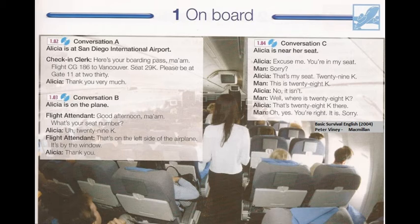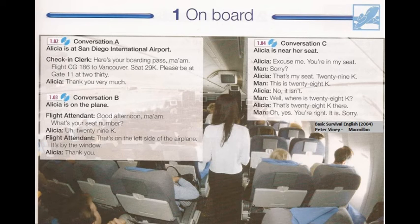1.4, Conversation C. Excuse me, you're in my seat. Sorry? That's my seat — 29K. This is 28K. No, it isn't. Well, where is 28K? That's 28K there. Oh, yes. You're right. It is. Sorry.